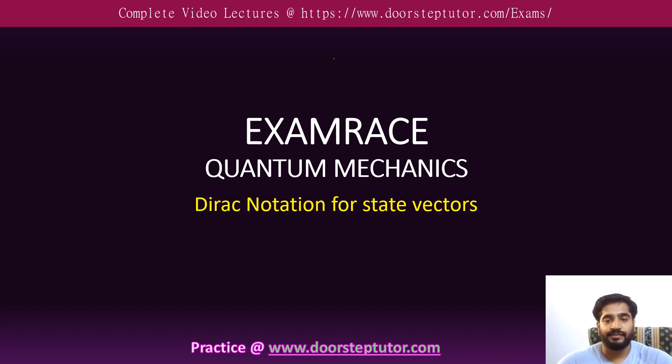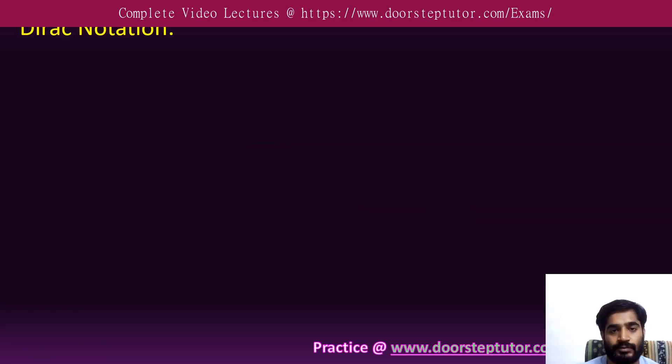Welcome to Examiner. This is quantum mechanics and we are here for Dirac notation of state vectors. Dirac notation is simply a vector which is of two types. The first one is the bra vector and the second one is the ket vector.